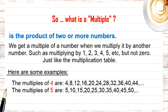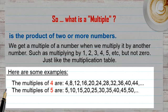So what is a multiple? A multiple is the product of two or more numbers. We get a multiple of a number when we multiply it by another number, such as multiplying by 1, by 2, by 3, by 4, or any other number — but not zero.